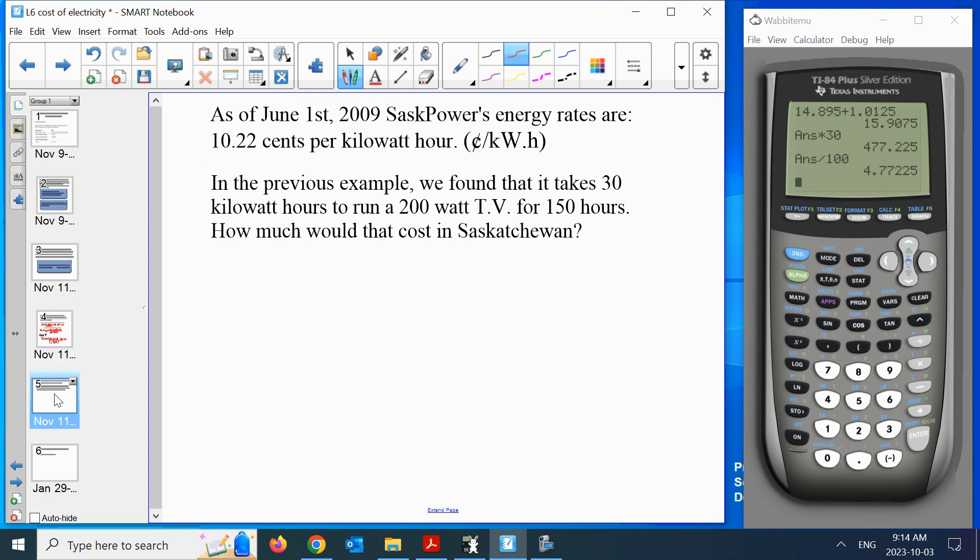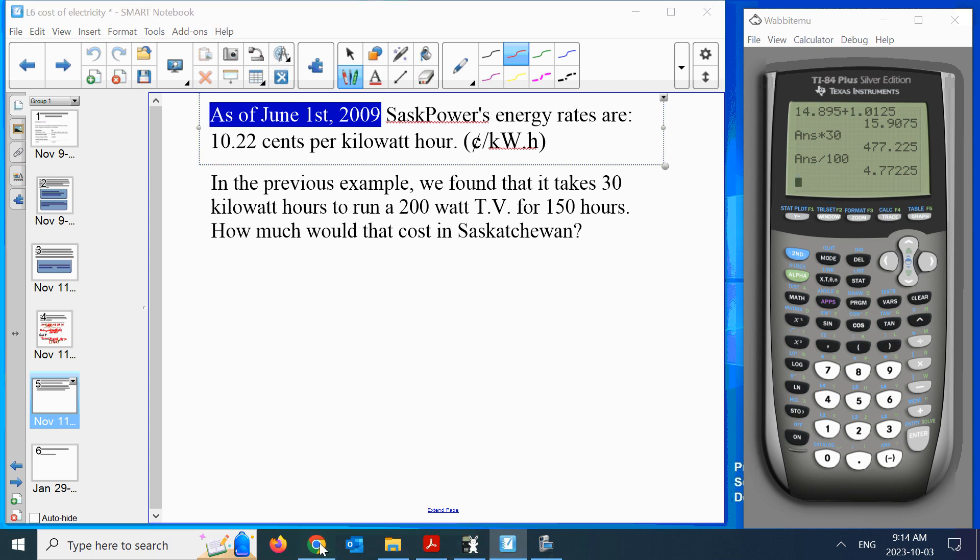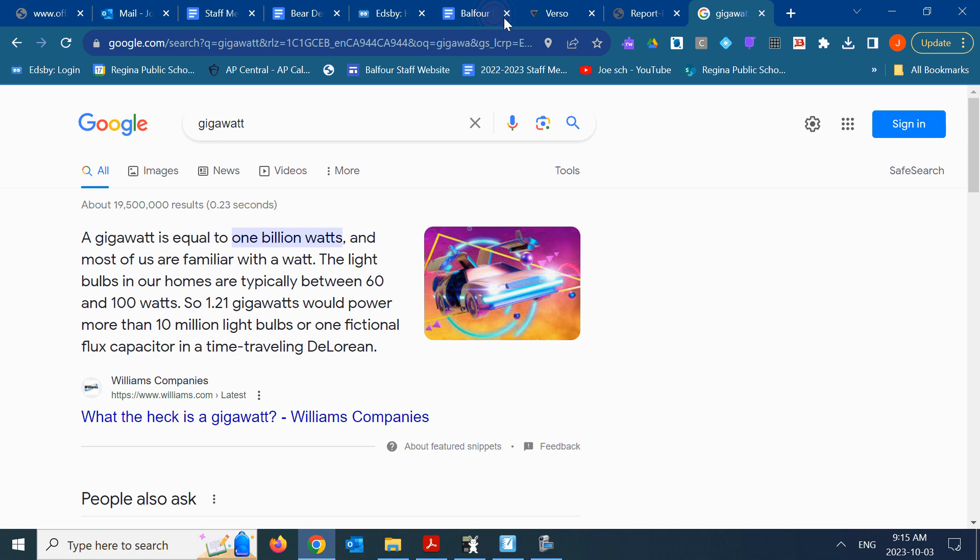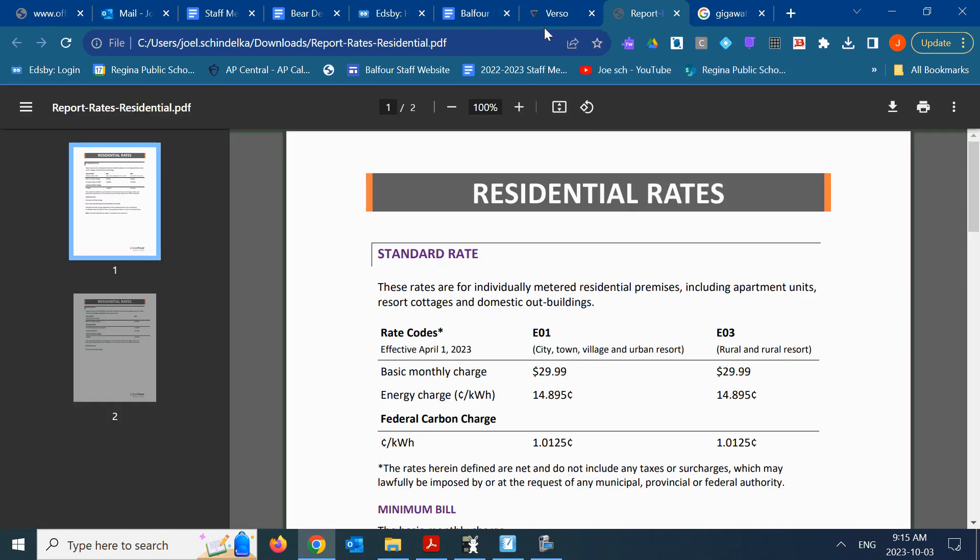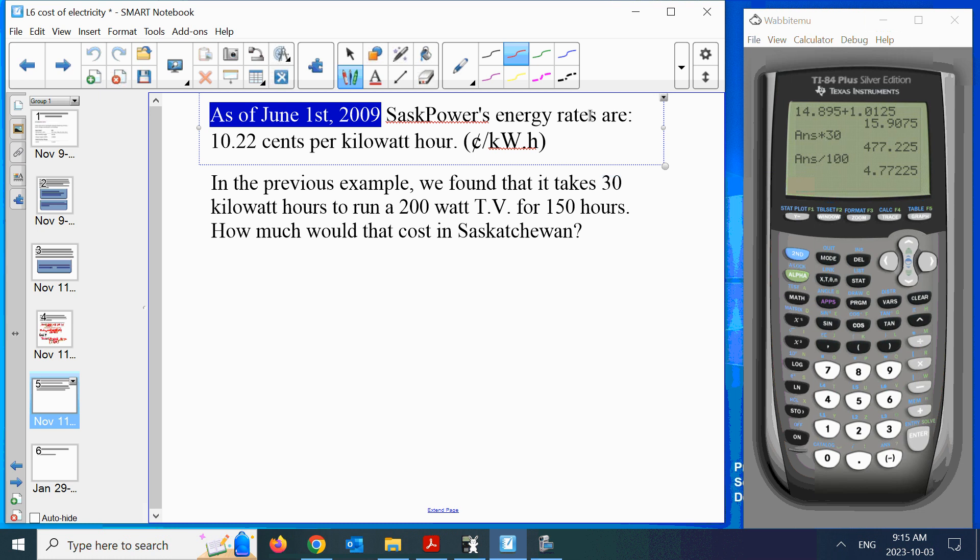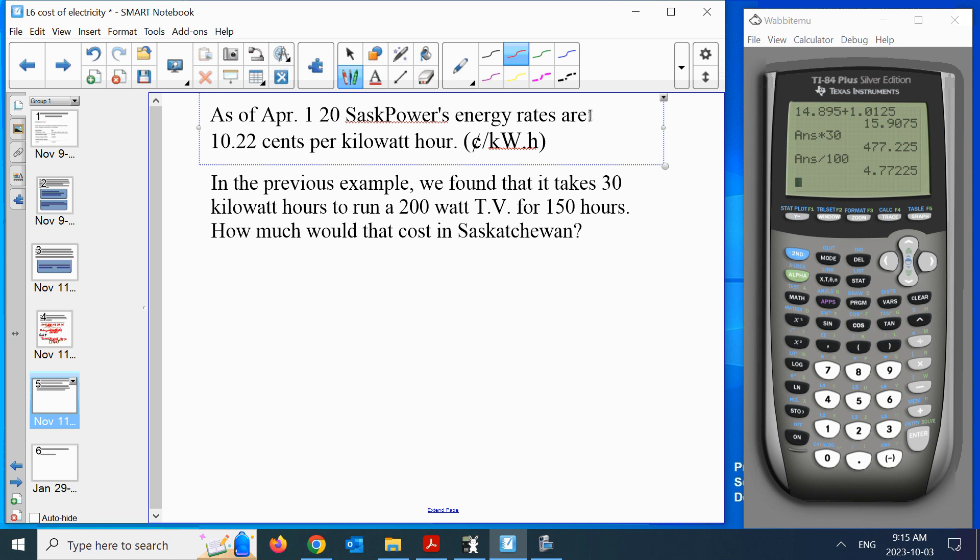That's enough of my advertisement. I'm going to update this. As of April 1st, SaskPower's rates were, I'm going to round it off to 15.91 cents per kilowatt hour. That's when you guys were born. Over your lifetime, it's gone up by five cents per kilowatt hour. That's pretty significant, though, because it was basically 10 to 15. As a fraction, a third, right? It was one-third cheaper when you were born.